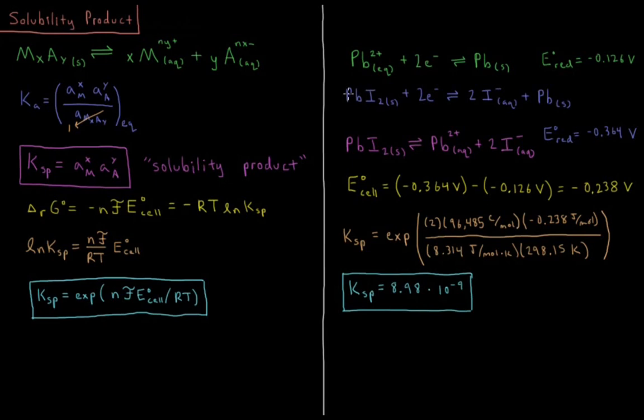Solid lead 2 iodide plus 2 electrons goes to 2 aqueous iodide anions plus solid lead. And then we have also that the net reaction when we add these two together is going to give us lead iodide yields aqueous lead 2 cations plus 2 iodide aqueous anions.